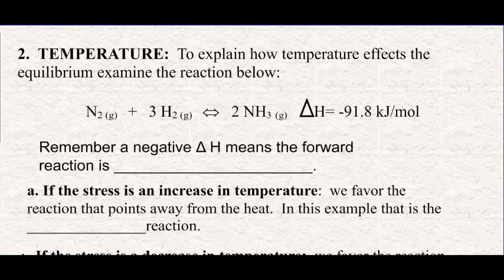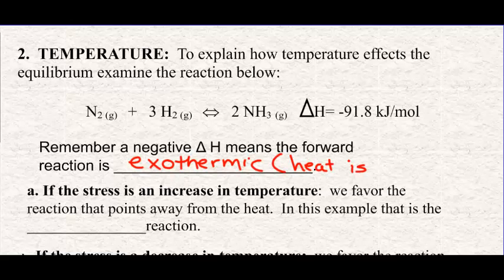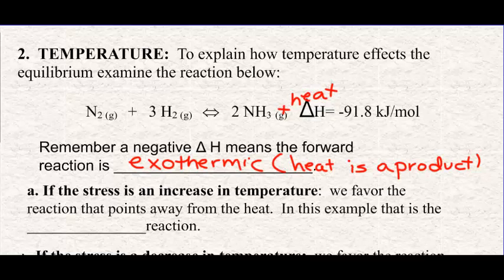So we have to talk about the other two stresses in this video. The second stress is temperature, and it's the same rule: up and away, down and towards. Remember that a negative delta H means the reaction is exothermic, and if you are exothermic, then heat is a product. So I'm just going to add the word heat to this reaction on the product side because delta H is negative. They'll either write it in or give you the delta H so you'll know where to place heat. In order to know the effect of temperature, you have to know if the forward reaction is exothermic or endothermic.